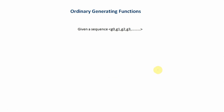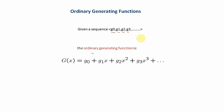The ordinary generating function is a way of representing a series with the help of a function or a summation. Given a sequence g0, g1, g2, g3, g4, g5, the generating function of this sequence is given by g(x) = g0 + g1·x + g2·x² and so on. In other words, it is given by the summation from k=0 to infinity of g_k · x^k. This is the ordinary generating function for this sequence.